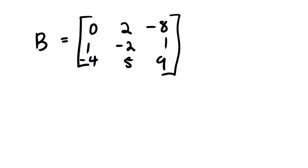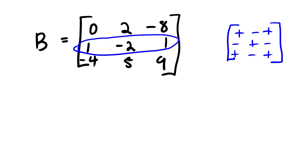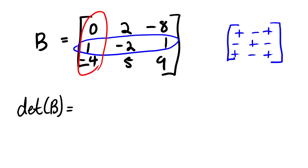Our next example — let us look at matrix B. Now remember the sign pattern is: positive, negative, positive, negative, positive, negative. For this one we are going to use row number three to determine the determinant using the Cofactor Method. The first element in row three is one. The sign at that position is negative. So we have negative one, and we open up the mini matrix with two, negative eight, five, and nine. You may pause the video to try this question yourself and then play the video to verify the answer.